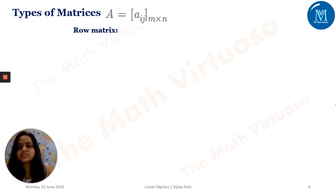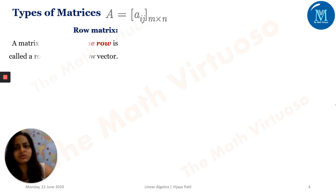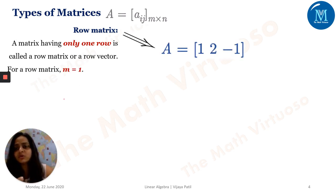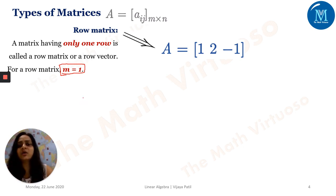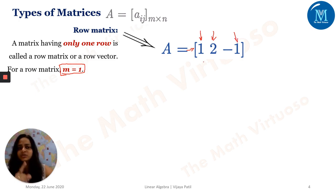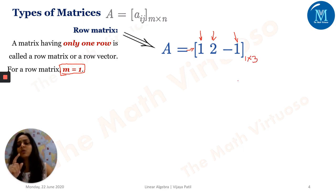Let us go to the types of matrices. The first is a row matrix. A matrix having only one row — no comment on the number of columns, which can be anything. So a row matrix has M equals to one. In the example shown, we have only one row and three columns, giving an order of one cross three.